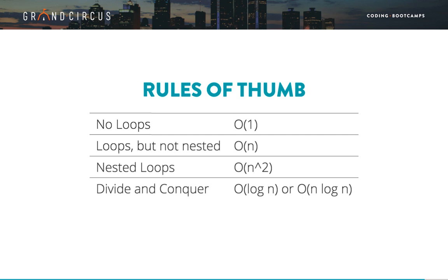At this point, we would not expect you to be able to determine the exact big O complexity of your code, as there are multiple factors involved. These rules of thumb are primarily examples to help flesh out what big O numbers mean in code.